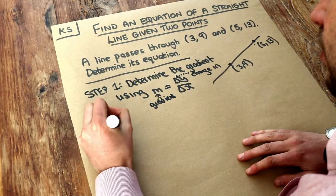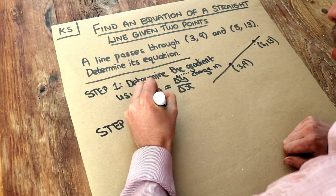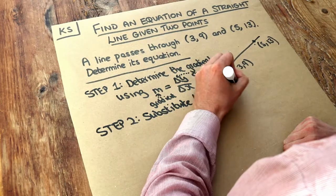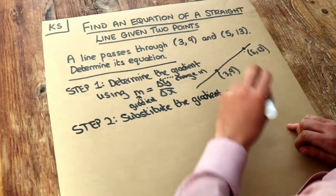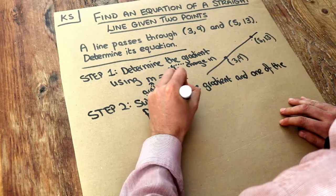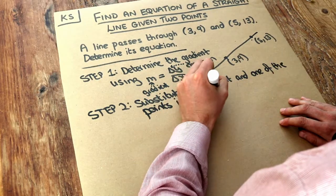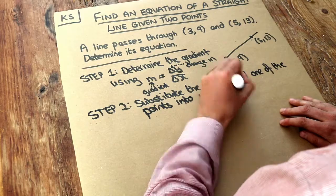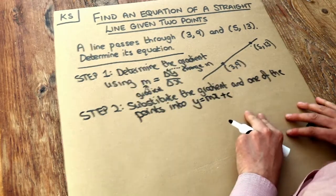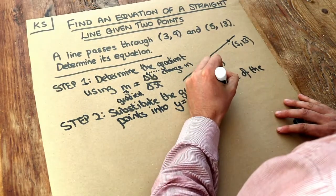And then step two is to substitute the gradient and one of the points, we're going to choose one of the points, into y equals mx plus c. Because we explored in a previous video that y equals mx plus c is a general equation of a straight line. And that will enable us to find c.